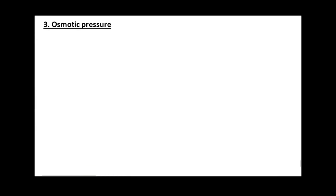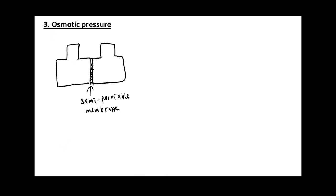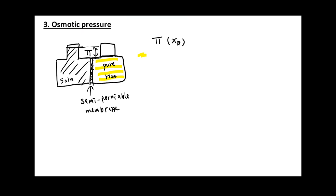The most interesting colligative property is osmotic pressure. Typically you have two containers separated by a semi-permeable membrane. On the right side you have pure water, and on the left side you have your solution containing some solute. When combined and allowed to reach equilibrium, they will have different heights. The height difference between the two is defined as the osmotic pressure, π. We want to express π as a function of the mole fraction of solute in the solution.